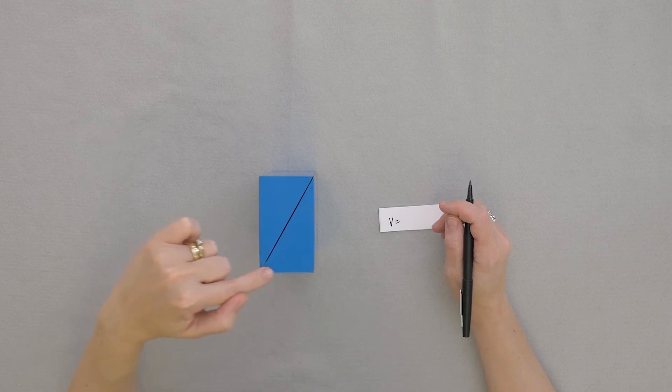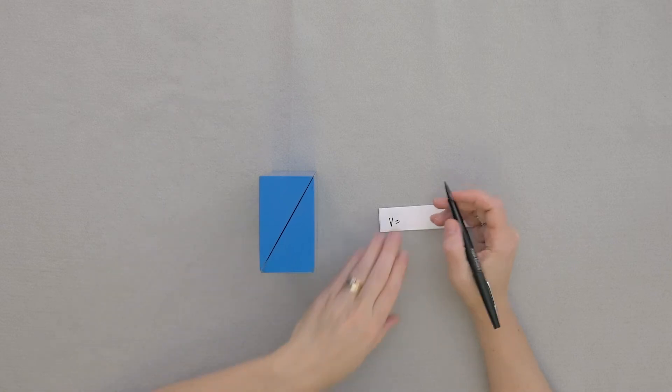This base, in terms of the triangular prism, is half the base. So let's write half the base.